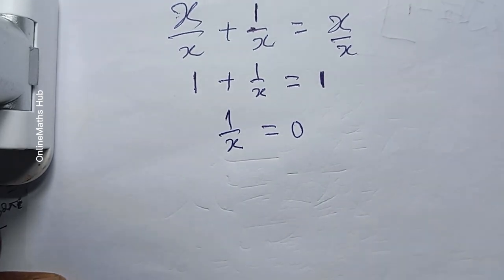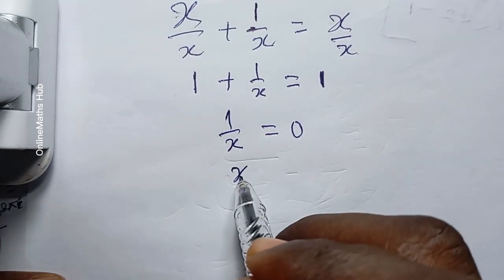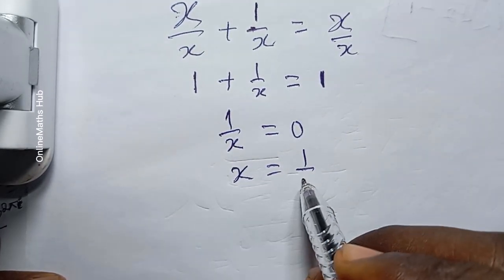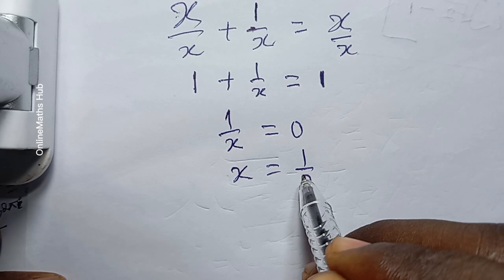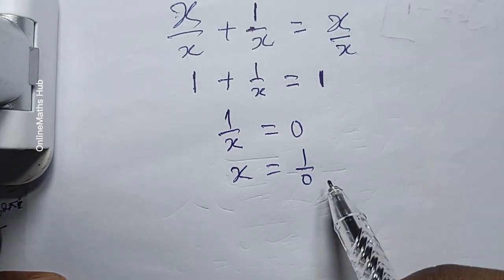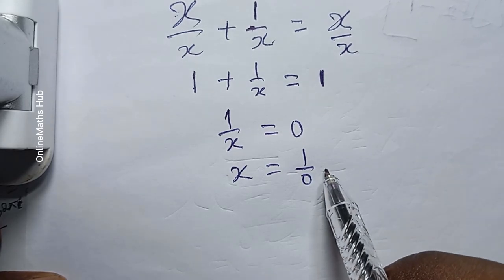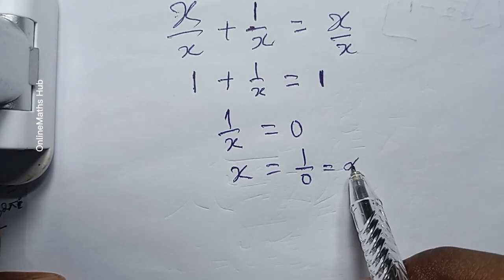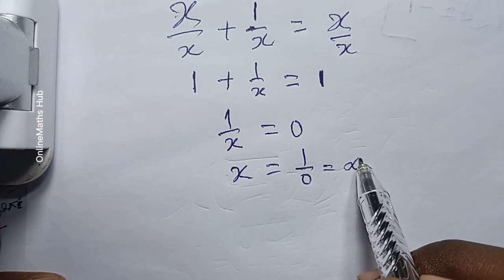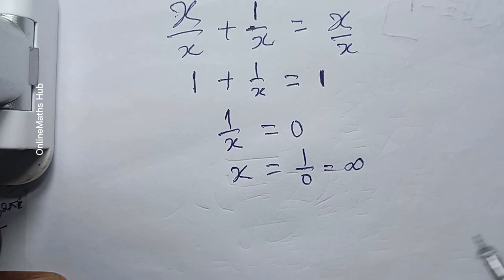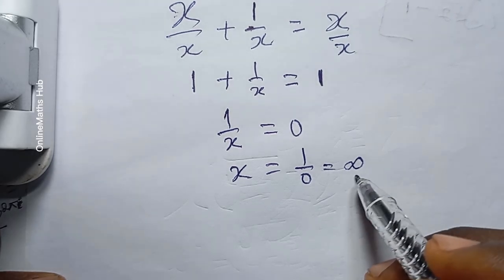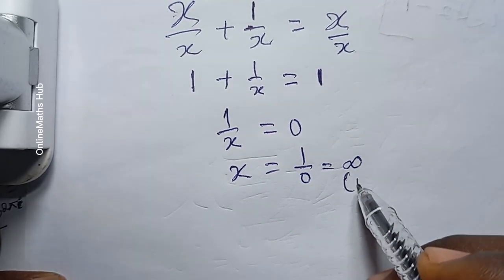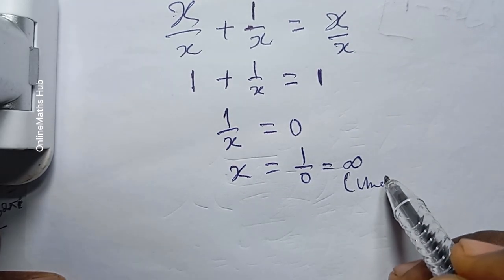Your x is eventually going to be equal to 1 over 0. Some people may say that this is equal to infinity, and some others may say that it is undefined.